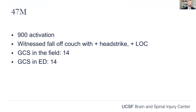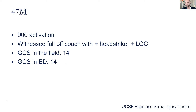This is a 47-year-old gentleman. A 900 activation is what we call our trauma activations at San Francisco General Hospital, so he comes in as a trauma activation. He was witnessed falling off his couch, hit his head, lost consciousness, a friend called 911, and an ambulance brought him in. In the field he had a GCS of 14, and in the ED he was also a GCS of 14.